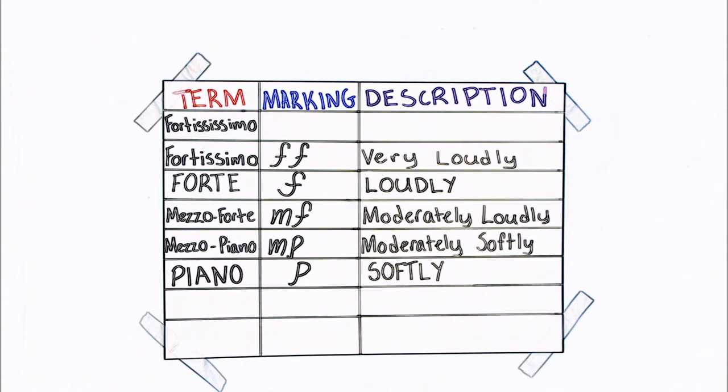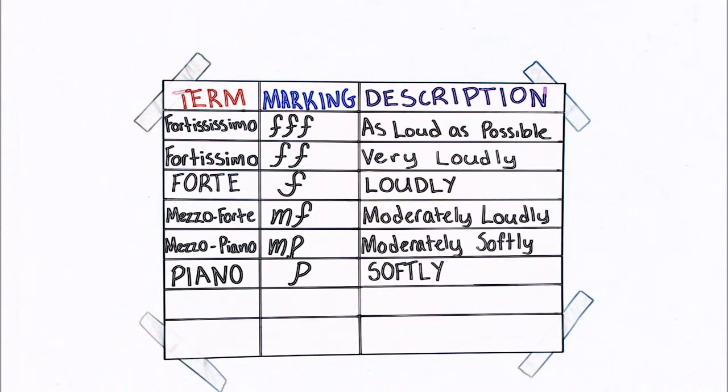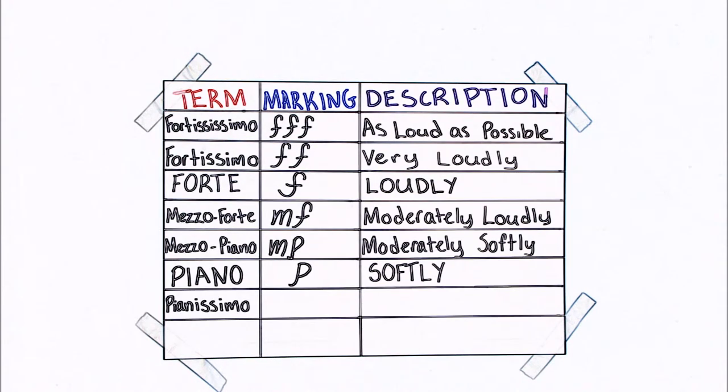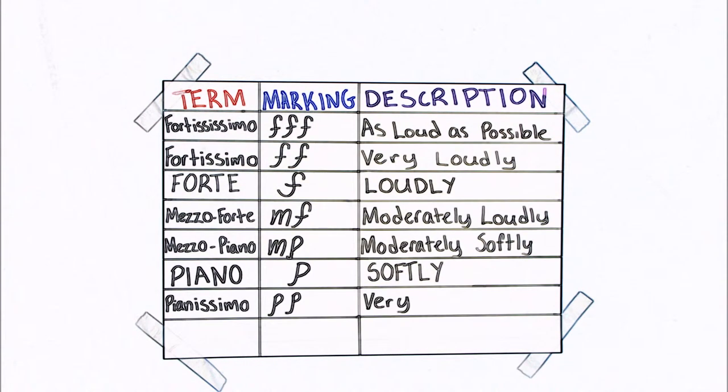Following that is Fortississimo, triple F, which is as loud as possible. Down the opposite end of things we have pianissimo or double P, which means to play very softly.